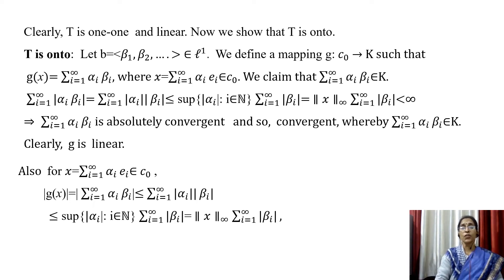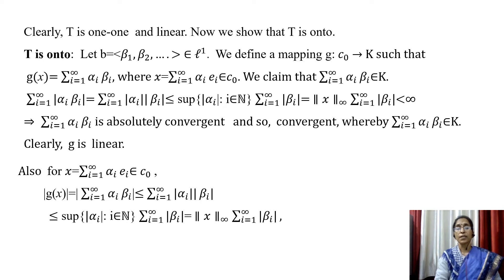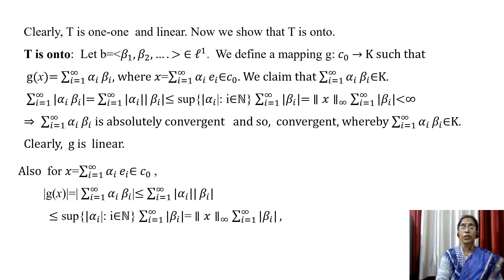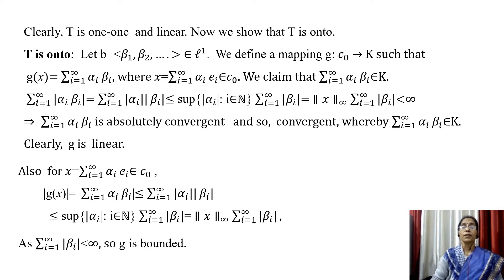Also, for x = Σᵢ₌₁^∞ αᵢeᵢ in C₀, |g(x)| = |Σᵢ₌₁^∞ αᵢβᵢ| ≤ Σᵢ₌₁^∞ |αᵢβᵢ| ≤ sup{|αᵢ| : i ∈ ℕ} · Σᵢ₌₁^∞ |βᵢ| = ‖x‖∞ · Σᵢ₌₁^∞ |βᵢ|. Since Σ|βᵢ| < ∞, g is bounded. Since g is linear and bounded, g is a bounded linear functional on C₀.